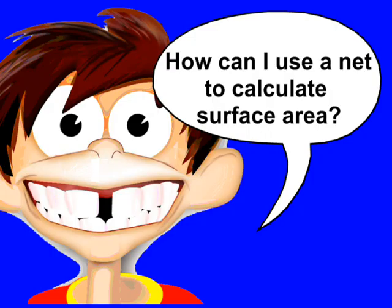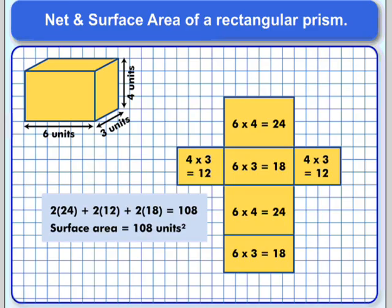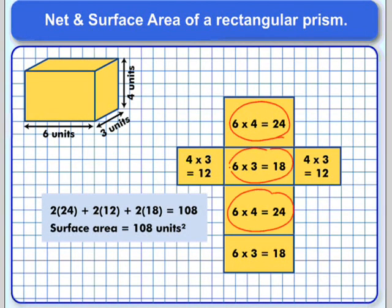How can I use a net to help me calculate surface area? Here's that same rectangular prism we looked at a moment ago. Once you've drawn the net, you can use it to figure out the area of each face, and then add those various areas together to get the total surface area.